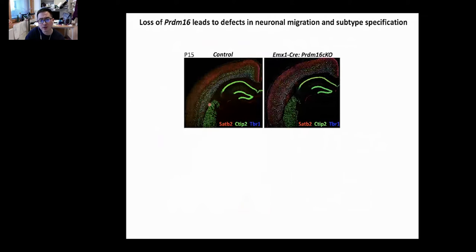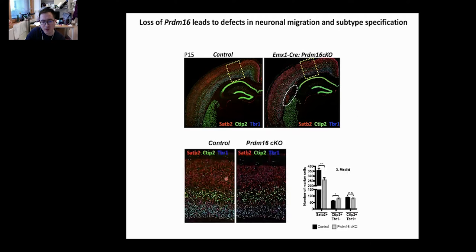To determine the intrinsic role, we use Emx1-Cre to specifically drive the deletion in the dorsal forebrain. This animal is called a conditional knockout and they survive very well, giving us a chance to do analysis at a later stage. For example, here from a coronal view of the brain hemisphere at postnatal day 15, you see that in the knockout, there's a big chunk of cells between the white matter and the deep layer, suggesting a migration defect. If we take a closer look at this region, you can see a similar cell fate phenotype as we observed in the null mutant.